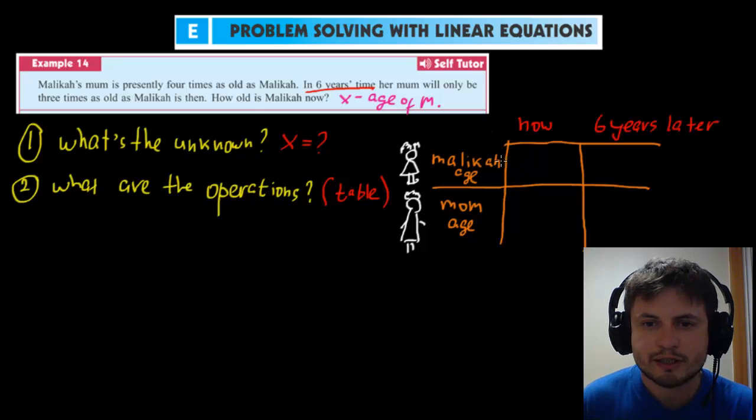So right now we know Malika's age and Malika's age right now is X. So this is X. And we also know that her mom's age right now is times four. So in other words it's 4X. So her mom's age right now is 4X.